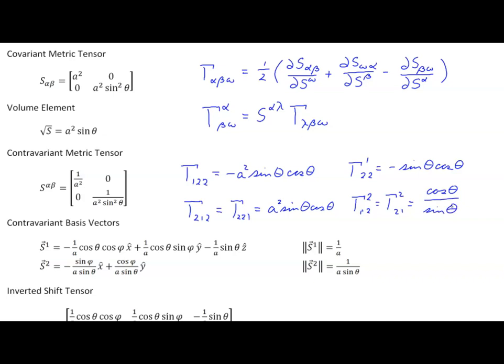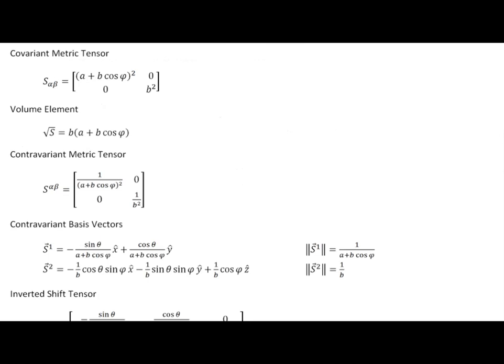That's the result for our spherical surface. We drop those in place — here are the Christoffel symbols of the first kind and here are the Christoffel symbols of the second kind. We'll move on now to the torus and go through the same drill.